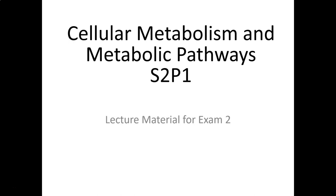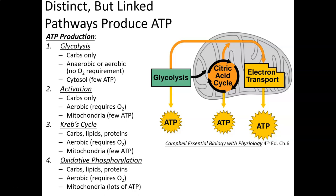This is the Cellular and Metabolic Pathways Lecture S2P1, which begins the material for Lecture Exam 2. We have very distinct but often linked pathways that produce ATP within the human body. One way to look at ATP production is through the metabolism of sugar — as we break down sugars, we use them for energy and produce ATP.